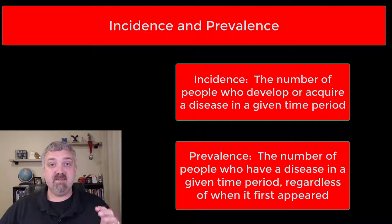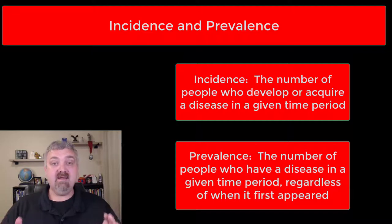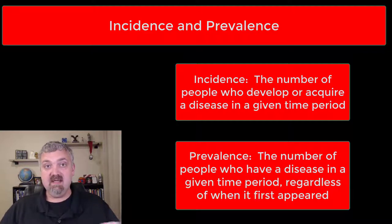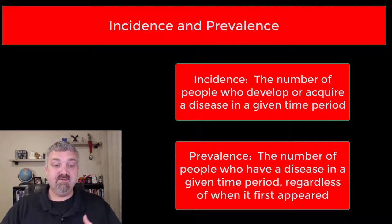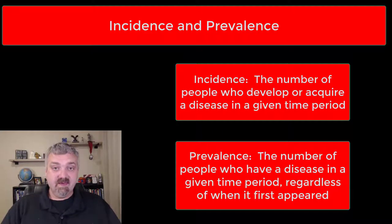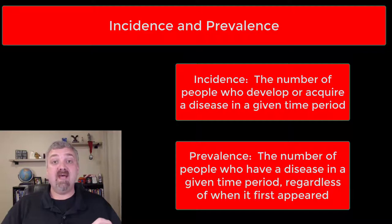The simple way to look at it: incidence is how many people got a disease during whatever time period we're talking about — cancer in 2019, the flu in January of 2014, it doesn't matter. Whatever the time period is, the incidence is how many people got the disease; the prevalence is how many people have it.